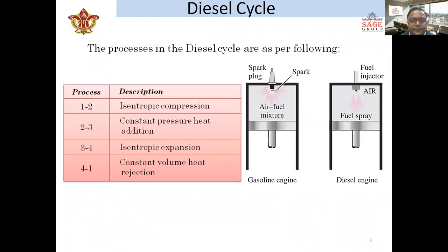This is the diesel cycle diagram in which the gasoline engine and the diesel engine are represented. The thermodynamic processes described here are: process 1 to 2, called isentropic compression, in which only air is compressed in the engine cylinder instead of a fuel-air mixture. Process 2 to 3 is constant pressure heat addition, where heat addition takes place by the fuel injection process occurring at the combustion chamber at the end of the compression stroke, where the air contacts the injected fuel, initiating combustion.